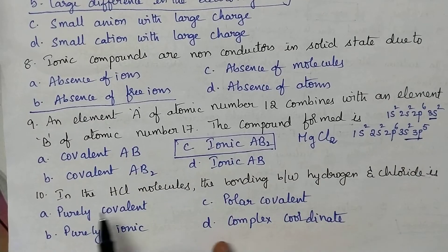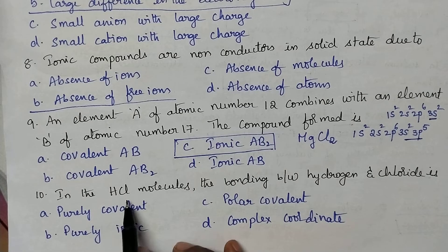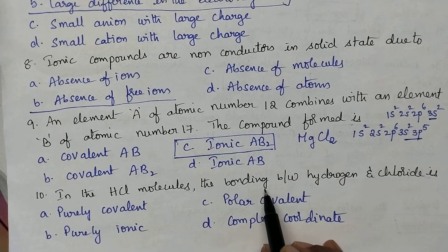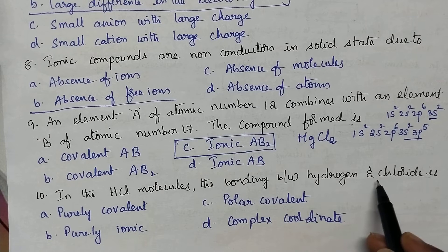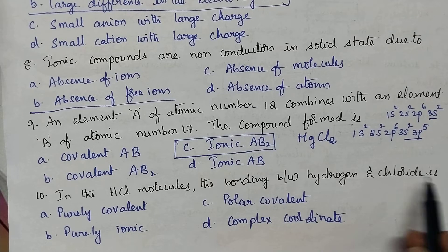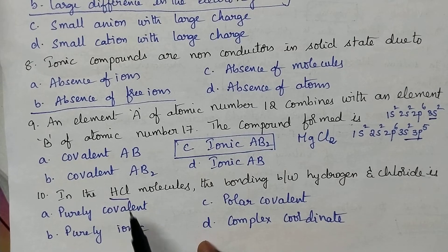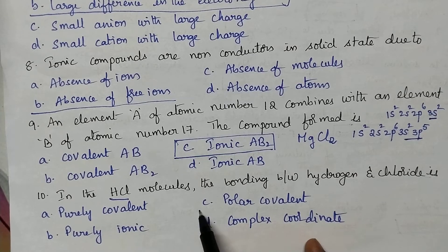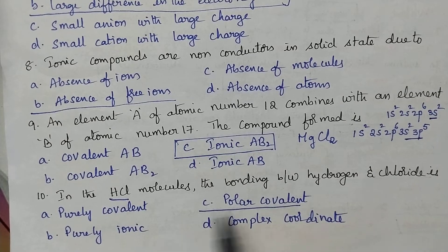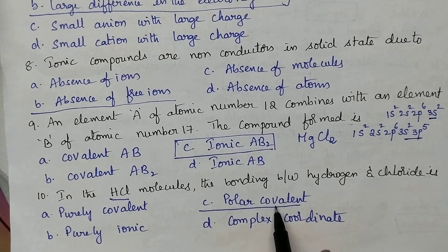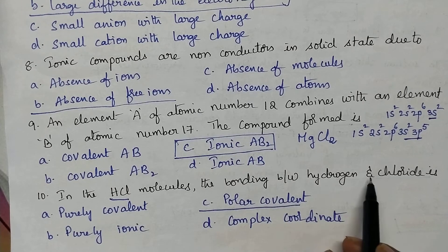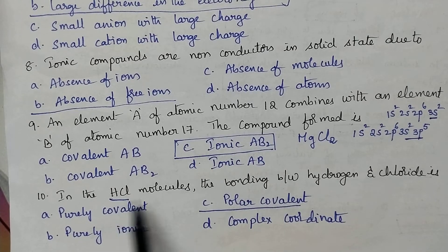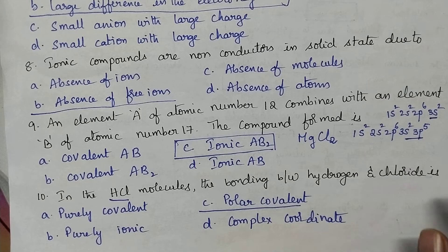In the HCl molecule, the bonding between hydrogen and chlorine is a polar covalent bond. HCl is a good example of a covalent bond — more specifically, it contains a polar covalent bond.